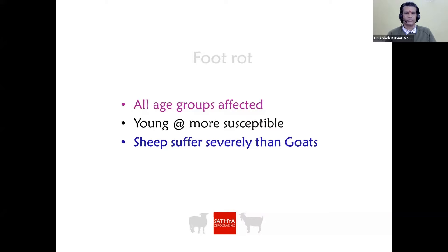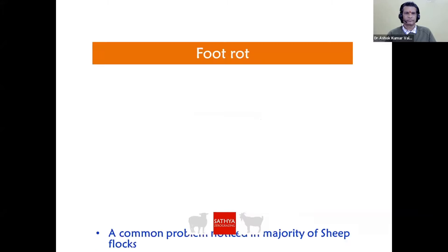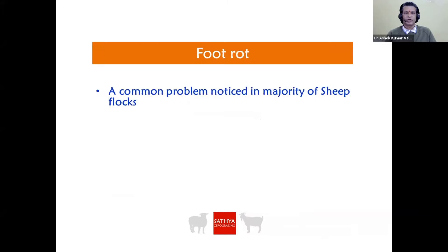This is a very important point for field veterinarians. Foot rot is seen mostly in sheep; it is seen in goats also, but goats suffer much less compared to sheep. It is a common problem in the majority of sheep flocks, and is always prevalent in 15-16% of sheep and goat flocks.